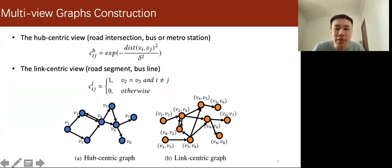In the first task, we transform the multimodal transportation network to a set of time-evolving graphs from two perspectives, the hub-centric view and the link-centric view.